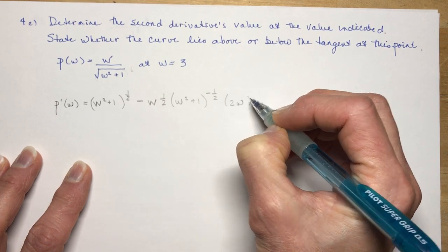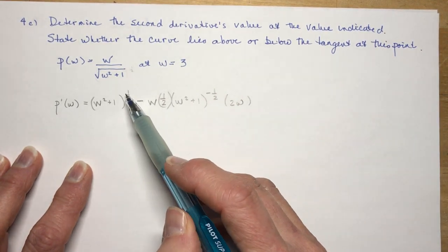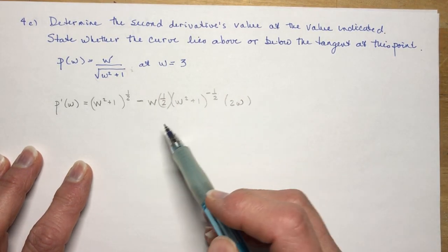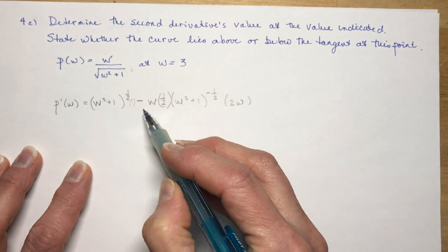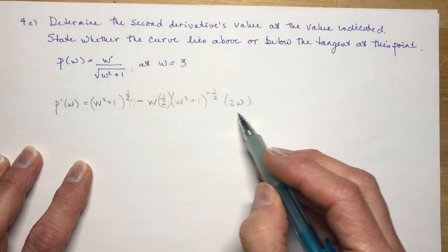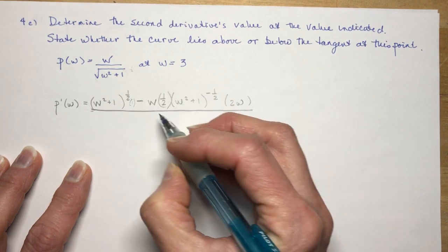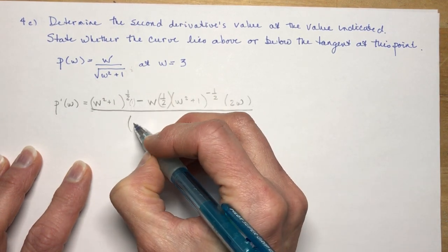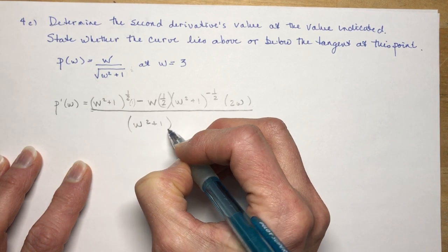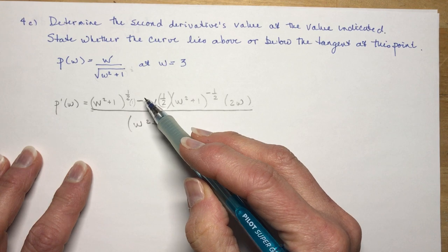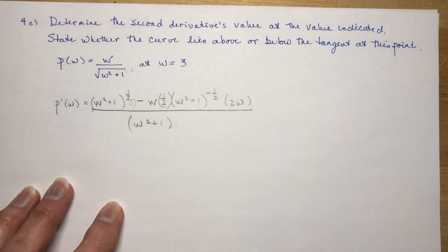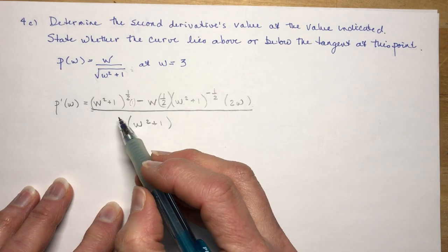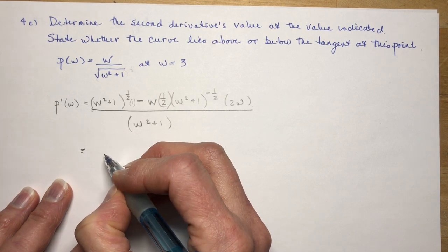The derivative of the inside is going to be one-half times (w² + 1) to the negative one-half times 2w. I'll put these in brackets so you can see. So I did one-half (w² + 1), reduced the exponent by one, and took the derivative of the inside. That's ho d-high — I'll put the one here for you — minus high d-ho, all over ho squared. So this squared is just going to be w² + 1.